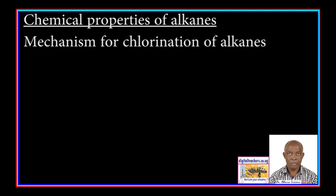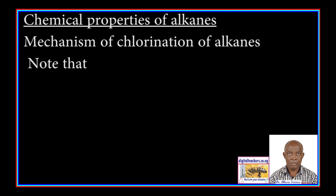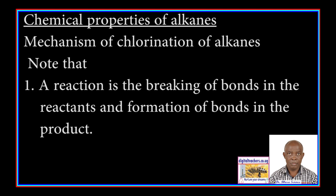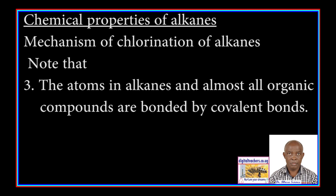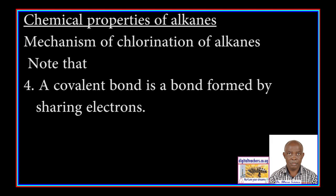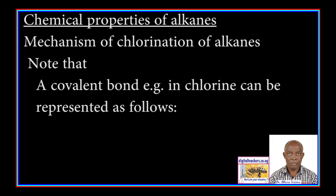Mechanism for chlorination of alkanes. Note that: 1. A reaction is the breaking of bonds in the reactants and formation of bonds in the product. 2. A mechanism is a series of steps indicating the order in which bonds break and form from the reactants to the product. 3. The atoms in alkanes and almost all organic compounds are bonded by covalent bonds. 4. A covalent bond is a bond formed by sharing electrons, and can be represented accordingly.